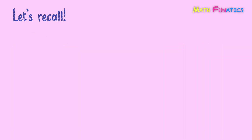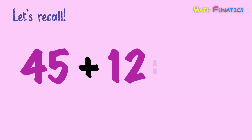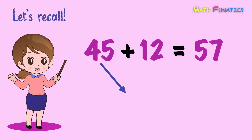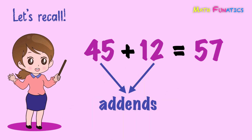Look at this equation: 45 plus 12 equals 57. 45 and 12 are what we call addends. Addends are the numbers that are combined or put together in an addition operation. 57, on the other hand, is what we call the sum. Sum or total is the answer in an addition operation.